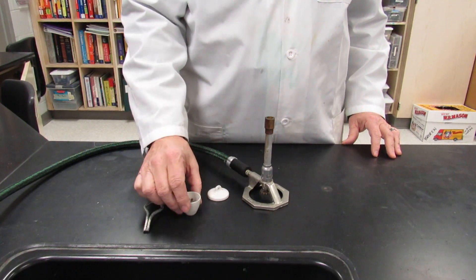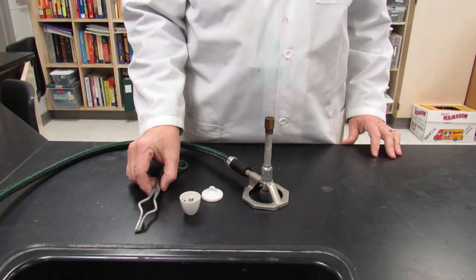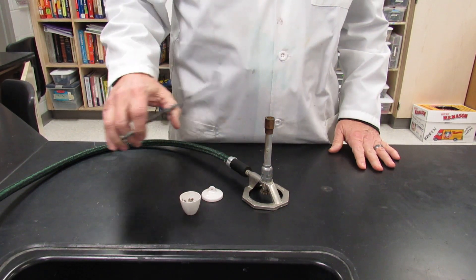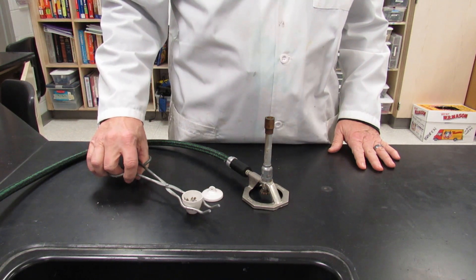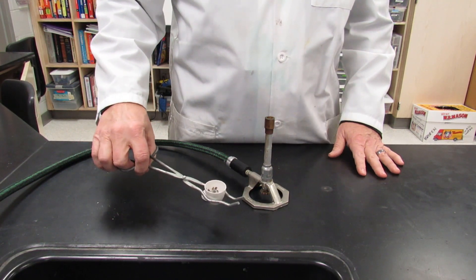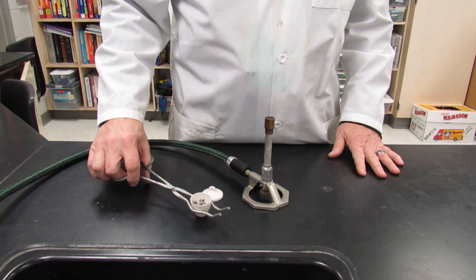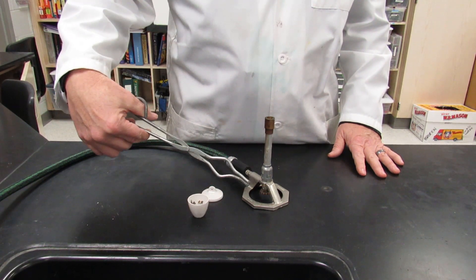When using the crucible tongs you're going to need to be able to grab the crucible with the tongs. It's designed to pick up the crucible in the little diamond shaped area. Make sure you pick it up easily. See the diamond shape?